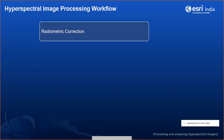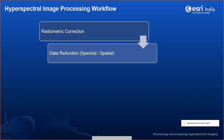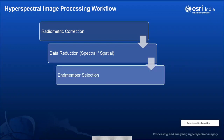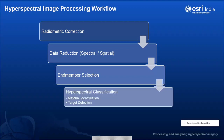The end-to-end workflow for hyperspectral imaging in ENVI starts with radiometric correction to correct radiance, followed by atmospheric correction to correct apparent surface reflectance. After viewing the data variation, we move to data reduction — spatial and spectral subsetting. Then comes end-member generation, which helps create spectral signatures or build a spectral library used for hyperspectral analysis, material identification, and target detection.